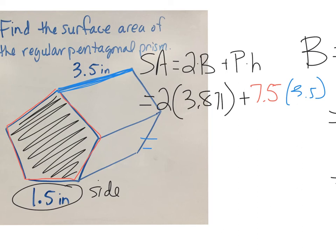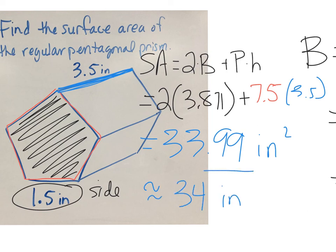Plugging all this into the calculator gives us 33.99 square inches, which is close enough to call 34 square inches. That's the amount of paper it would take to make this pentagonal prism with a side of 1.5 inches and a height of 3.5 inches.